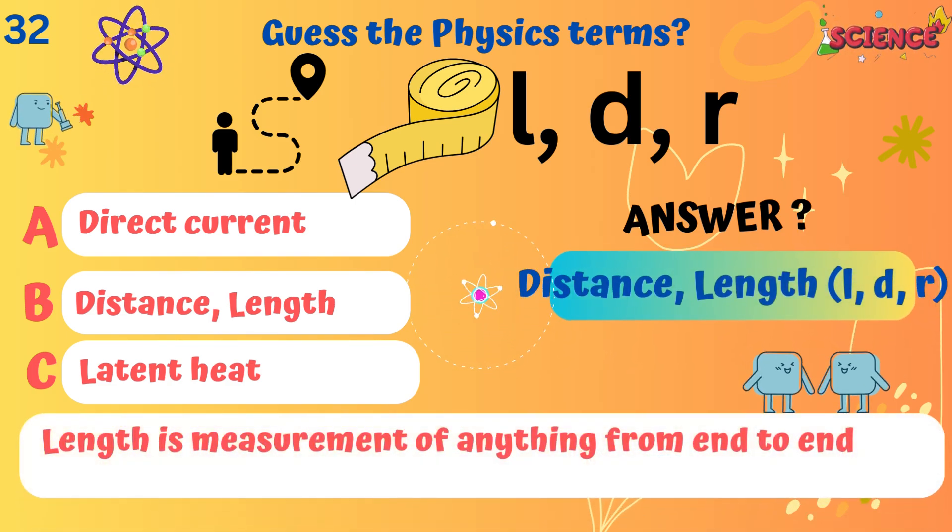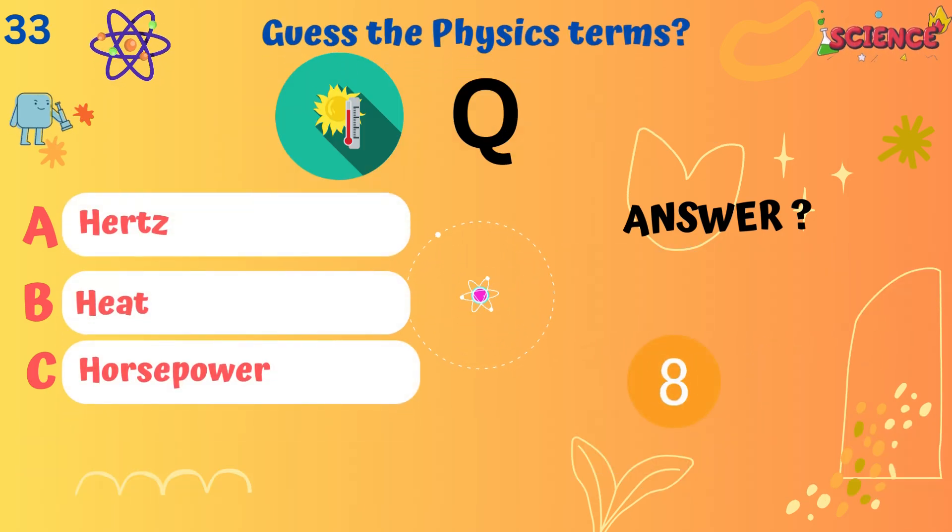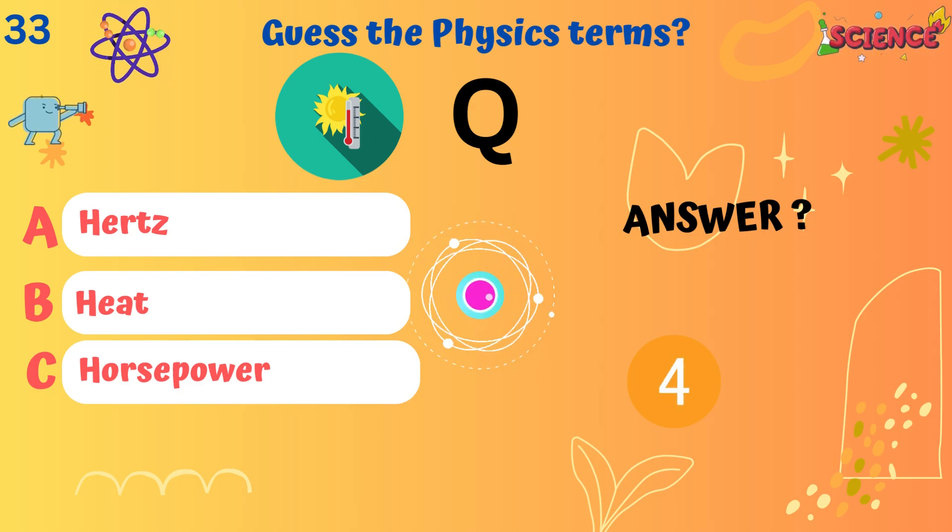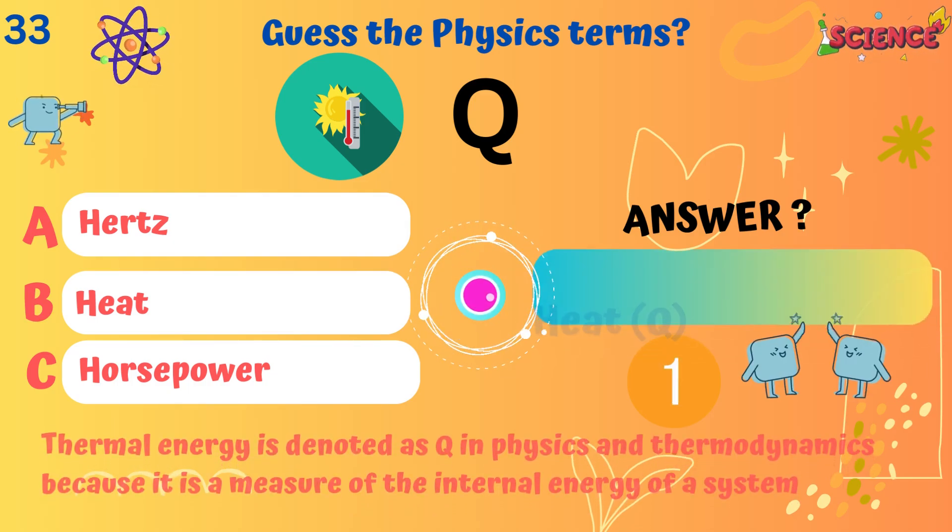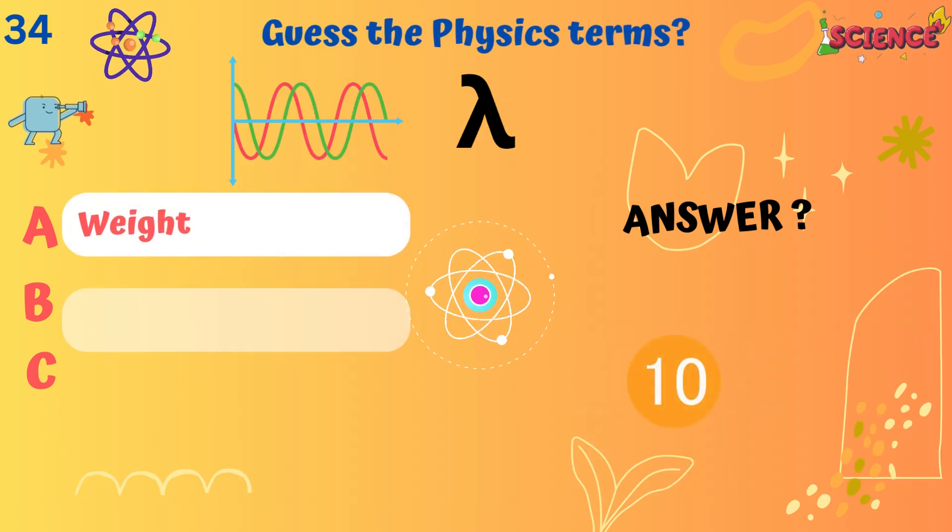Distance. Length is measurement of anything from end to end. Heat. Thermal energy is denoted as Q. It is a measure of the internal energy of a system.